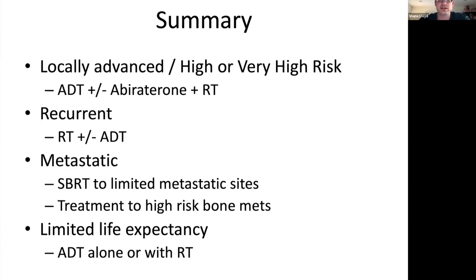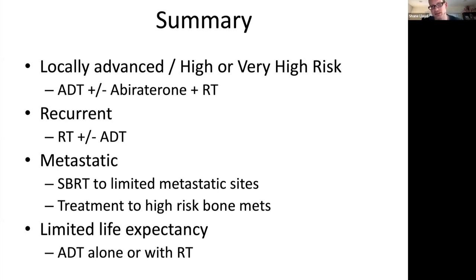In summary: locally advanced high or very high-risk patients are typically treated with radiation plus hormone therapy, perhaps with abiraterone. Recurrent disease typically involves radiation therapy plus or minus hormone therapy. Metastatic disease with a limited number of sites can be treated with focal high-dose SBRT. If there are many sites in high-risk locations, radiation can help prevent fractures and keep patients out of the hospital. For patients with limited life expectancy, ADT alone — sometimes with radiation — can be offered.